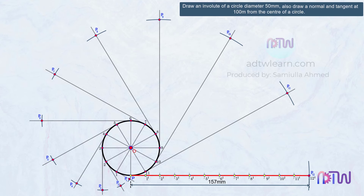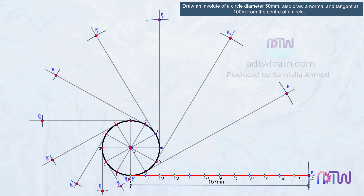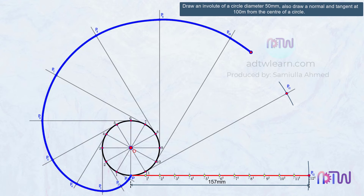Since we got all the points, join these points with a smooth curve. This is our final involute of a circle.